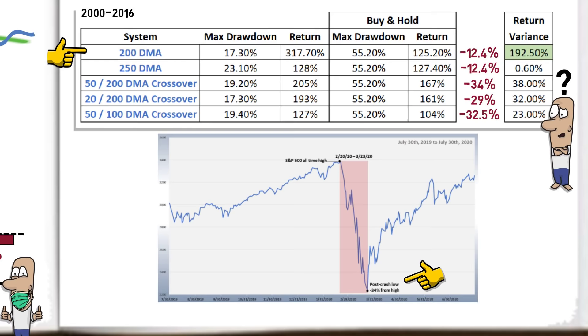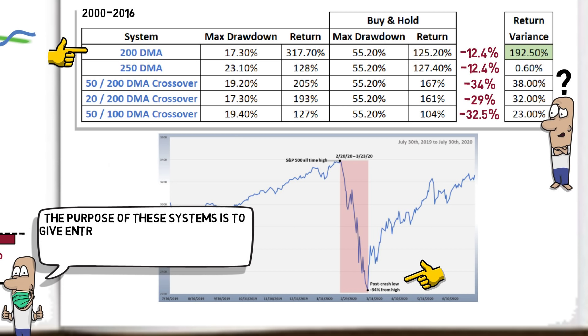The author Steve Burns summarises the analysis by saying, the purpose of these systems is to give entry signals that get you into uptrends and out before strong downtrends. The evidence certainly reinforces his theory and answers the initial question of, can you beat buy and hold?